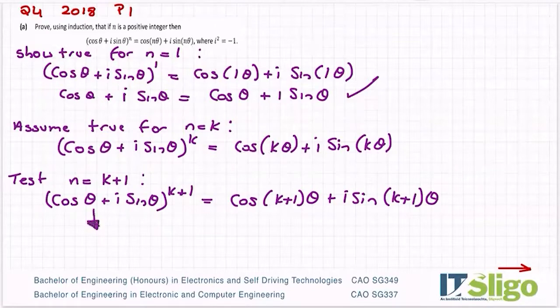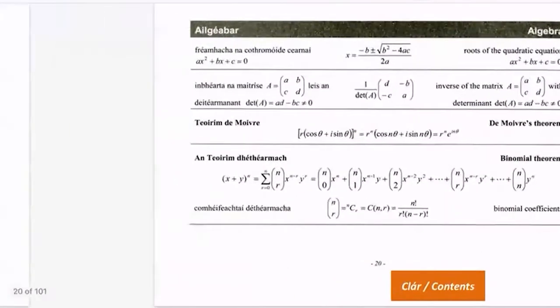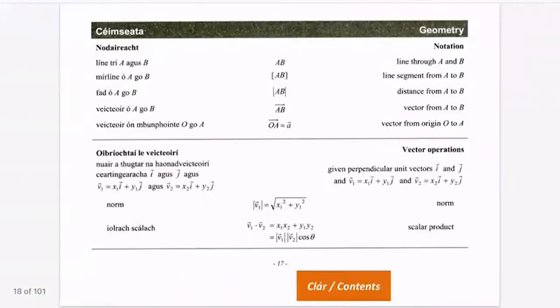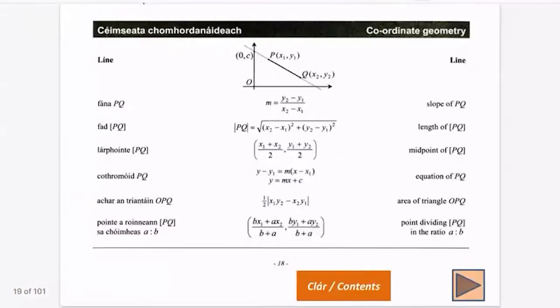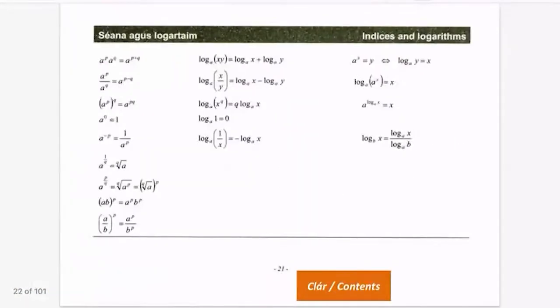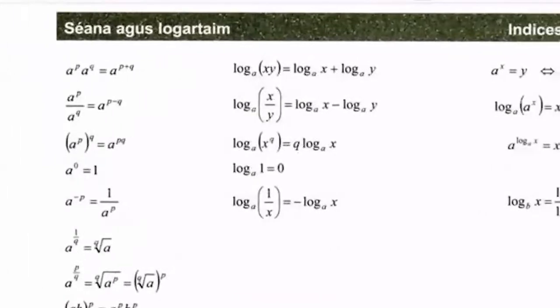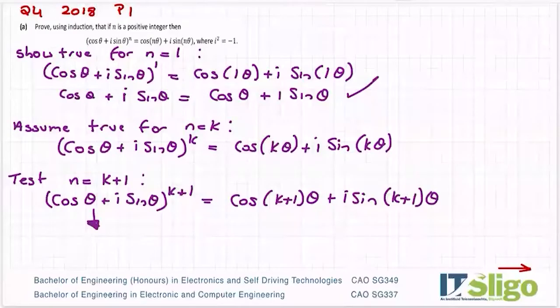So let me work from this side here. So cos theta plus i sine theta to the power of k plus 1. So the first thing I'm going to do to simplify that is use one of the rules of indices. When you've got something in the powers that's added together, you can break it out. So it's the base number to p, the base number to q.